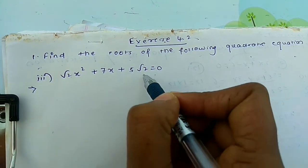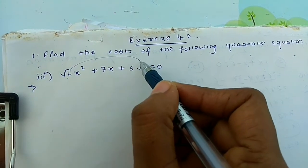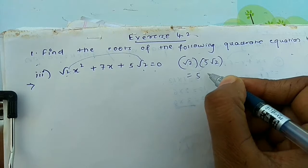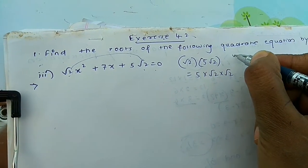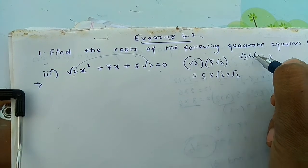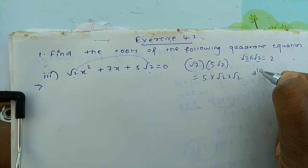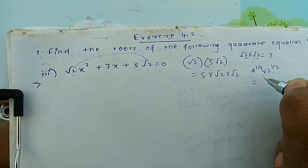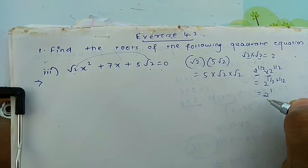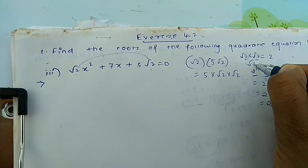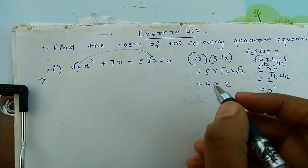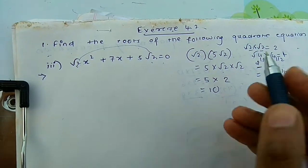Remember, we always have to multiply a into c — that is the coefficient of x² multiplied by the constant. Here that is √2 into 5√2. So 5 stays as it is, and √2 into √2: whenever you have the same base, keep the same base. √2 into √2 equals 2 raised to the power 1, which is just 2. So 5 times 2 equals 10.